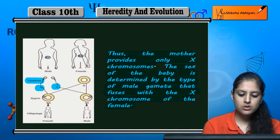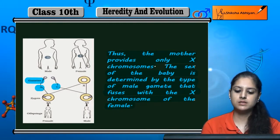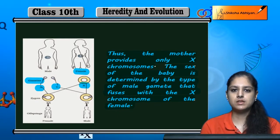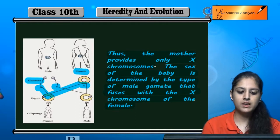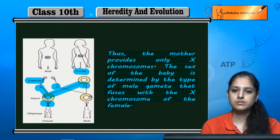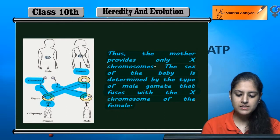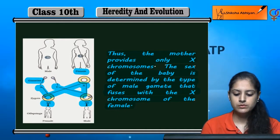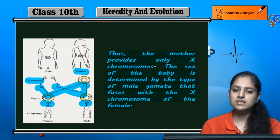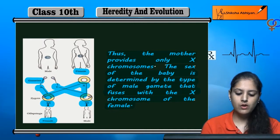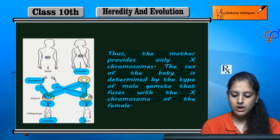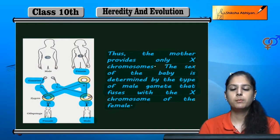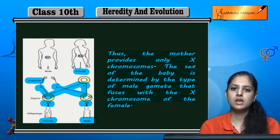As you can see, X and Y can come from the male, and only X can come from the female. If the female's X combines with the male's X, then XX is formed. But if the female's X combines with the male's Y, then XY is formed. So if the type is XX, the offspring is female, and if the type is XY, the offspring is male. This is how the sex of the child is determined in human beings.